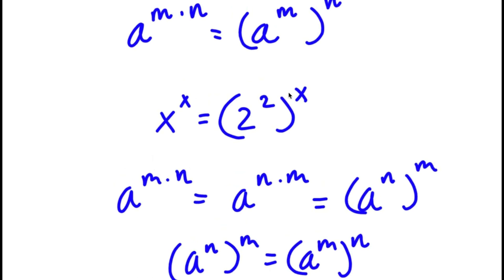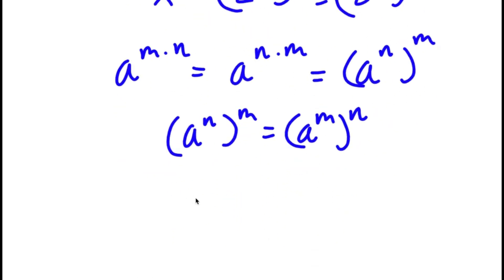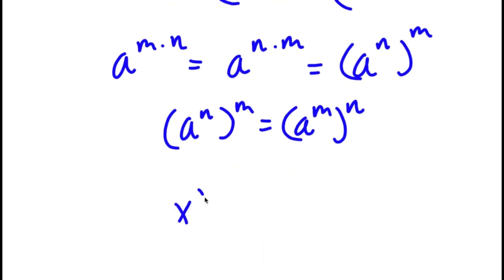So 2 to the power of 2 to the power of x is the same thing as 2 to the power of x to the power of 2. Now I have x to the power of x is equal to 2 to the power of x to the power of 2.